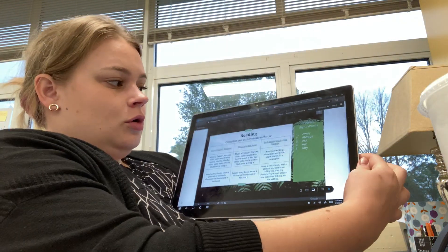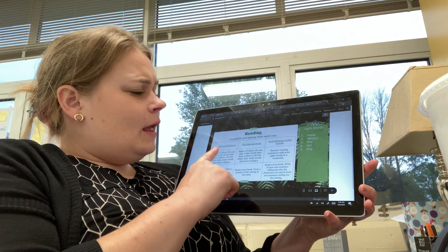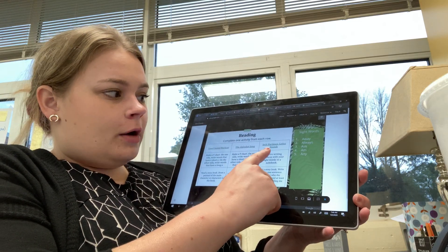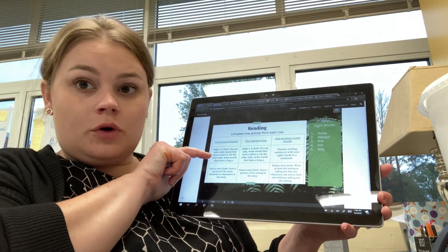So the top row is the same. You're going to choose one of these songs. There's a vowel sound workout, the alphabet song, and Jack Hartman's letter sounds. Then you're going to move to row two.